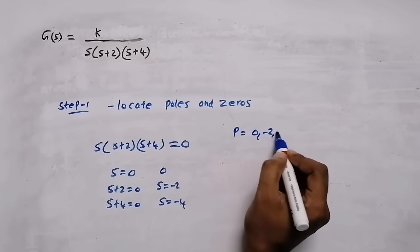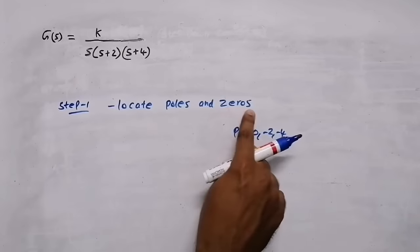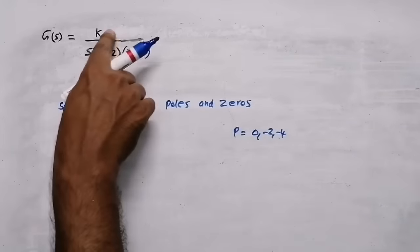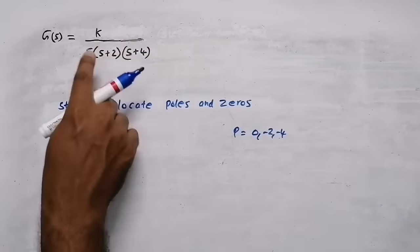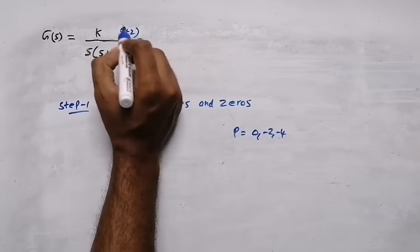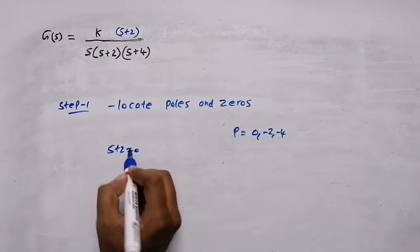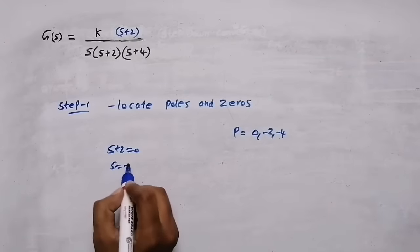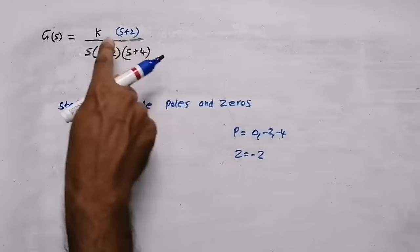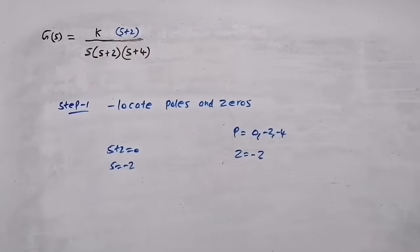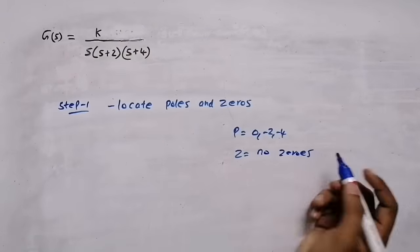Now we need to find zeros. To get zeros, equate the numerator equal to zero. In this case there is no numerator term — if there were a term like (s+2) in the numerator, we would get a zero at s=-2. But in this question there is no such term, so we write: no zeros.